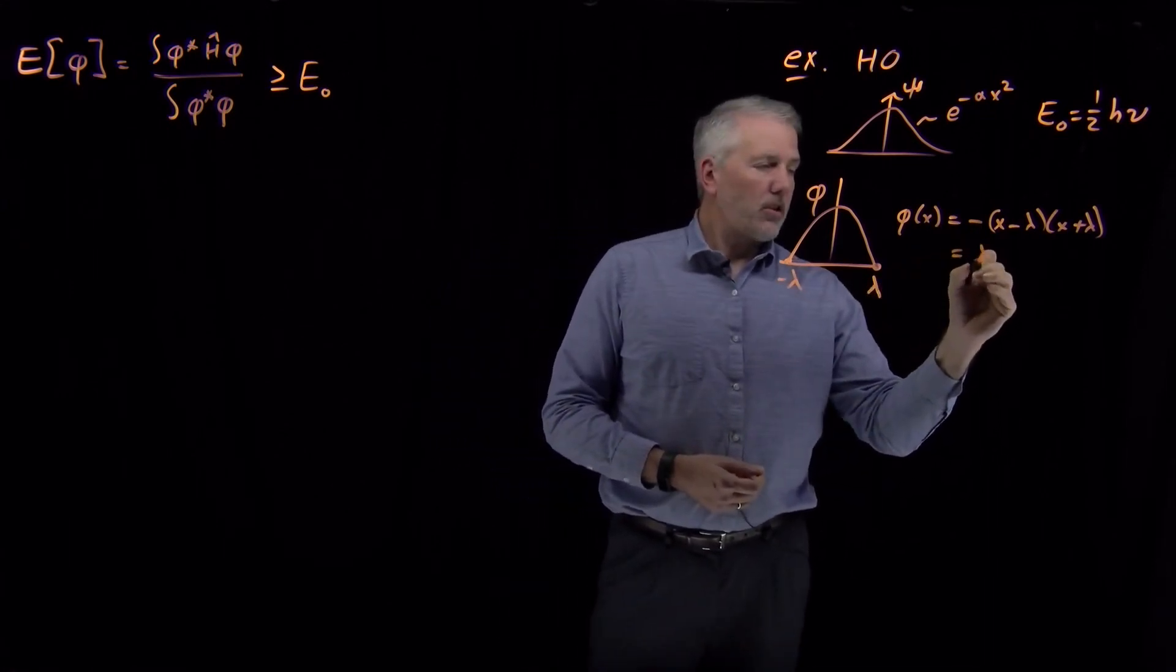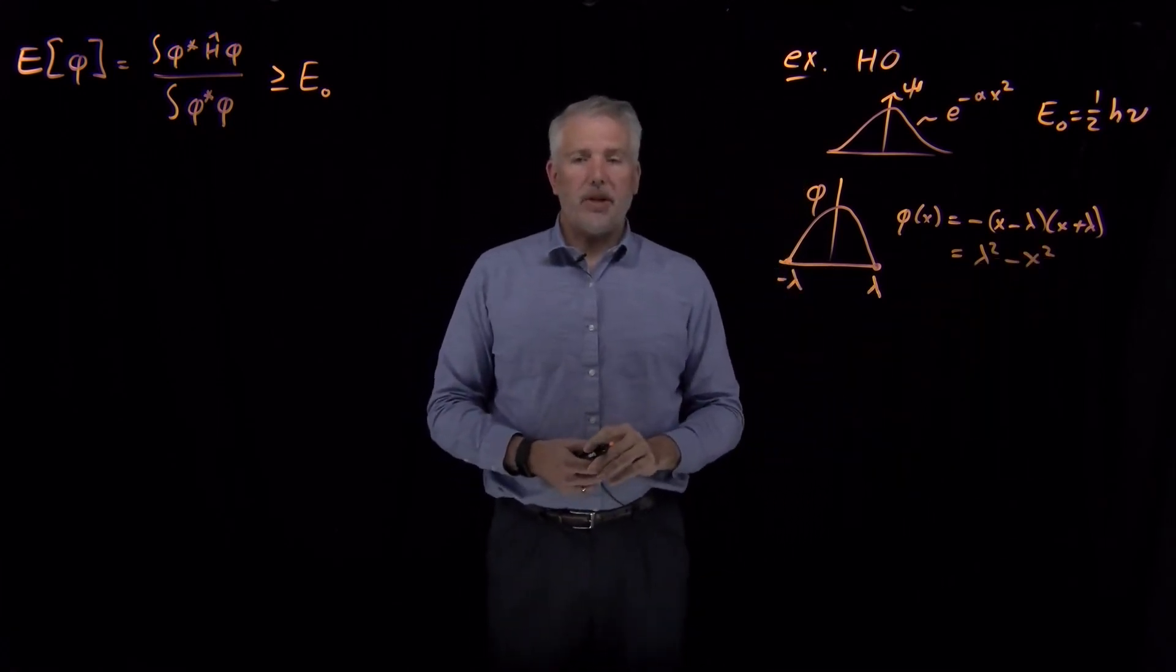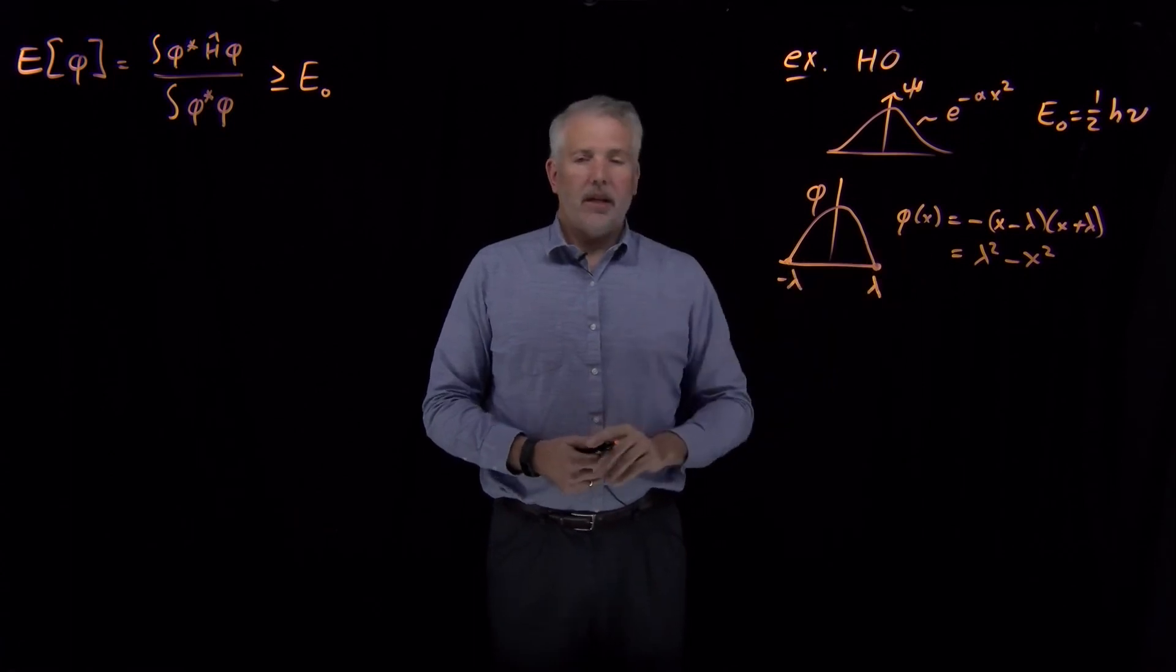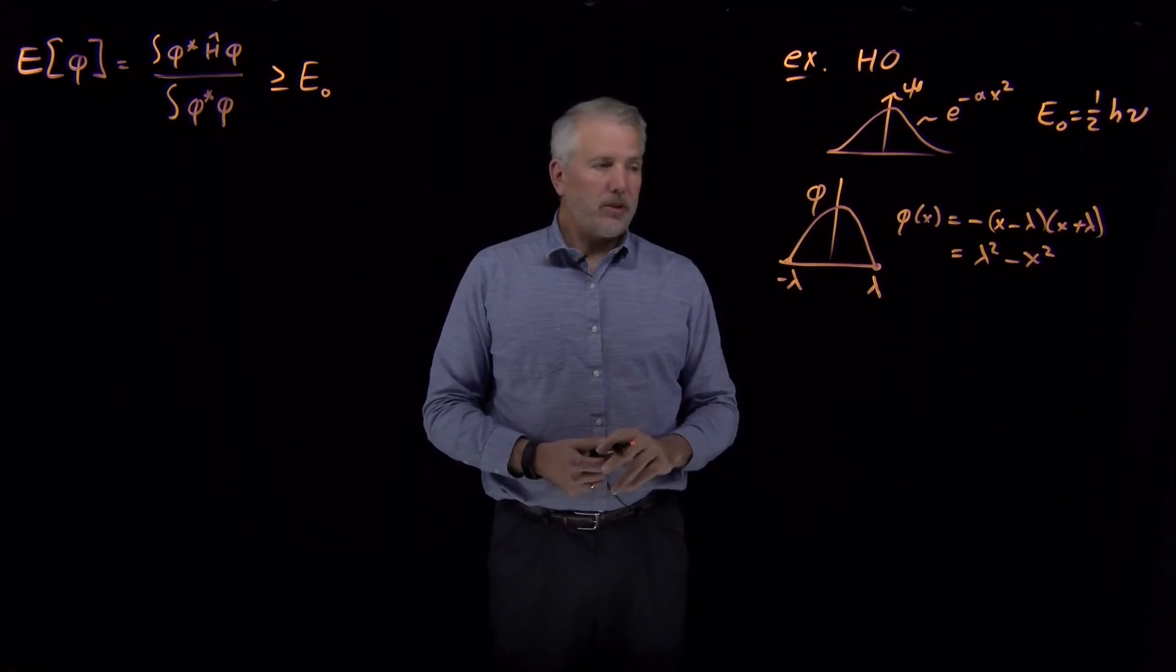That function is going to look like lambda squared minus x squared, then that's what I'm going to use for my trial function. And right now, I won't take a guess for the value of lambda.